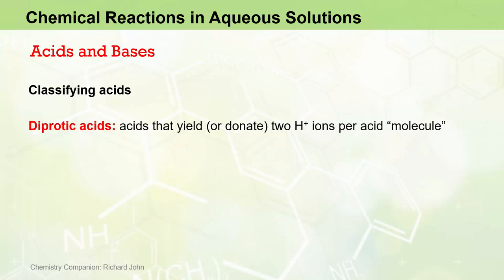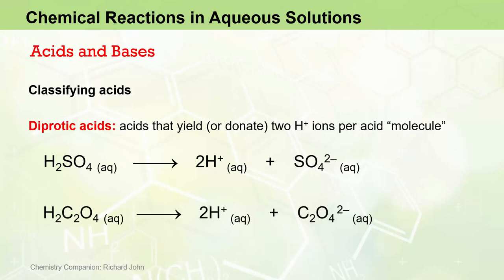Diprotic acids are acids that yield two H-plus ions per acid molecule, and the classic example here is sulfuric acid, H2SO4. Oxalic acid is another common example, H2C2O4. We can see that both of these acids donate two H-plus ions to the solution, and the corresponding anions have a two minus charge.